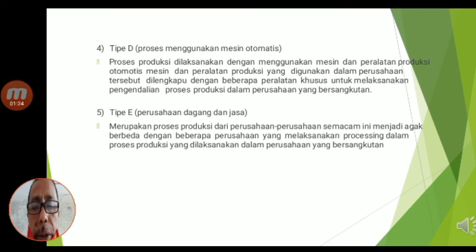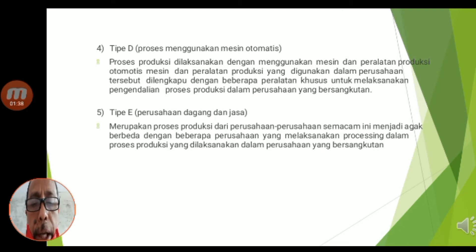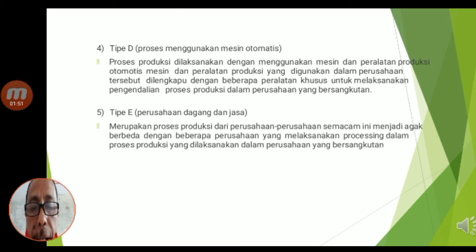Untuk mengingat kembali pembelajaran yang kemarin, pada tipe A adalah dapat diperiksa dengan mudah. Pada tipe ini setiap tahap proses produksinya bisa dilakukan dalam perusahaan dan dapat diperiksa secara mudah. Kemudian pada tipe B, dapat diperiksa dalam beberapa tahap. Dan tipe C adalah terdapat penggabungan komponen produk, di mana perusahaan yang menyelesaikan produksi akan terdapat beberapa ketergantungan dari masing-masing tahap produksi.